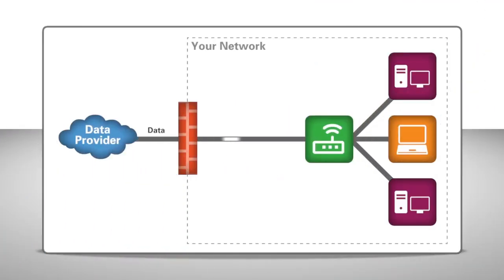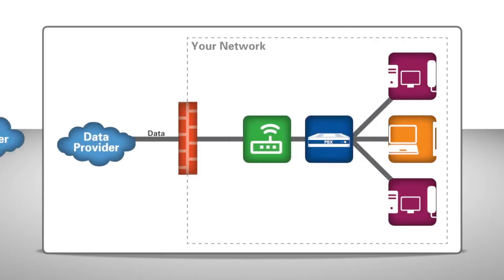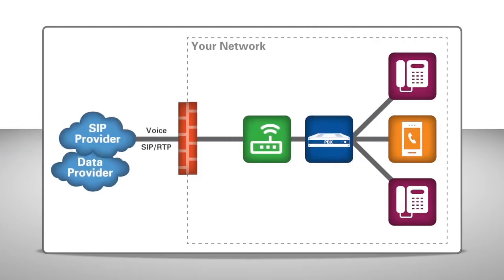You've already built up your computer network with a firewall as your primary security solution, thus protecting your data, and everything is working well. And now you've added a PBX and a SIP trunking service on top of your existing network. You're ready to save loads of cash.